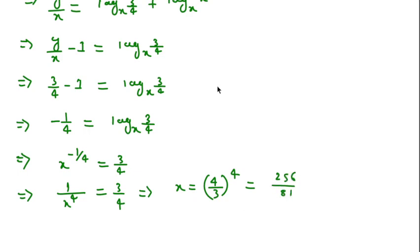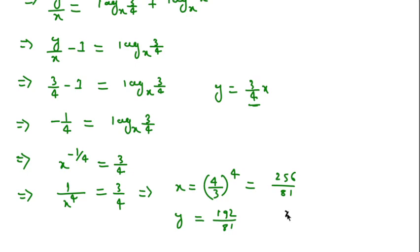Putting this value into y equals 3 over 4x, we get y equal to 192 over 81. Since we have to find the sum x plus y, that is 256 over 81 plus 192 over 81, which equals 448 over 81. Thanks for watching this video — please like, share, and subscribe to this channel.